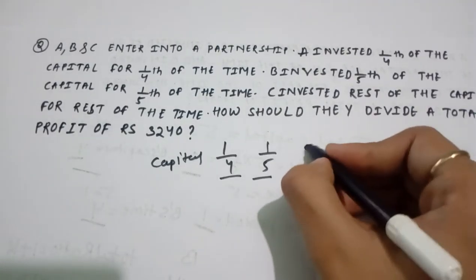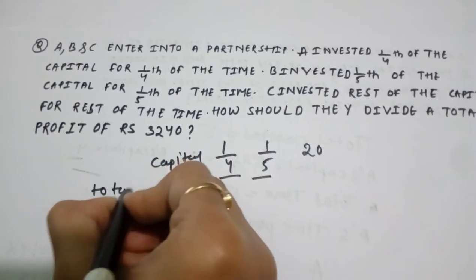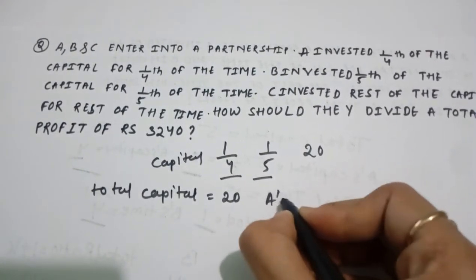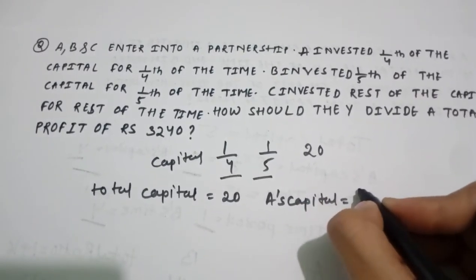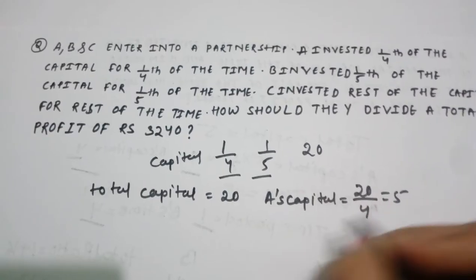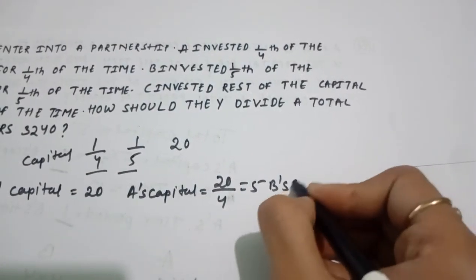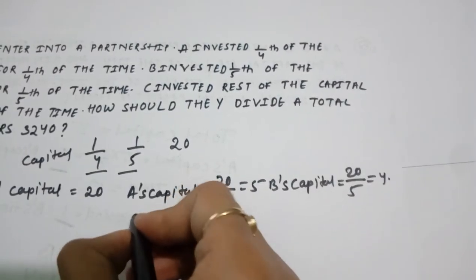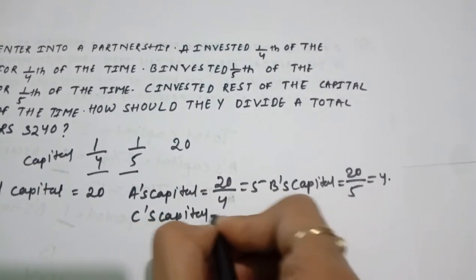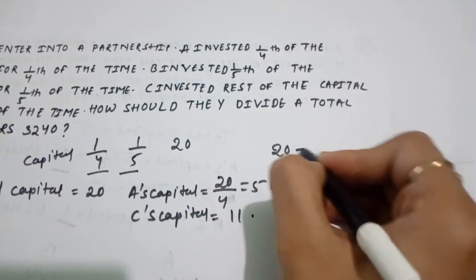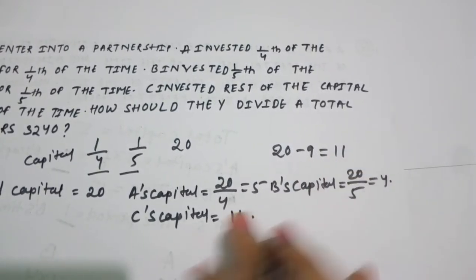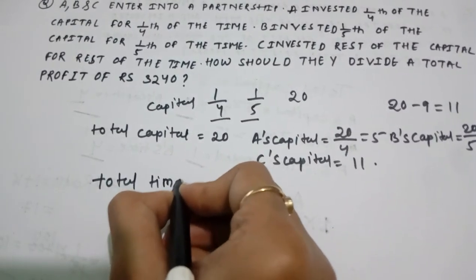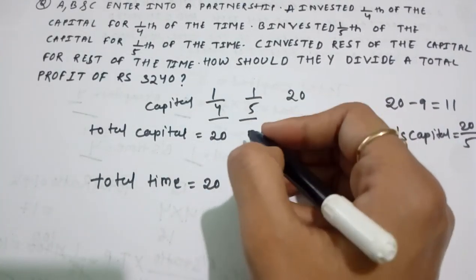The LCM of 4 and 5 is 20, so we take the total capital as 20. A's capital is 20 divided by 4, which equals 5. B's capital is 20 divided by 5, which equals 4. C's capital is the rest, which equals 20 minus 5 plus 4, equals 11. The total time period is also 20.